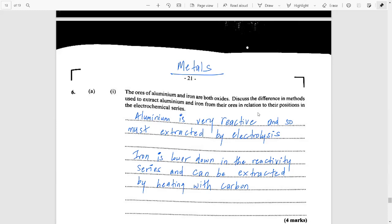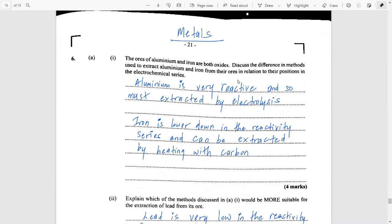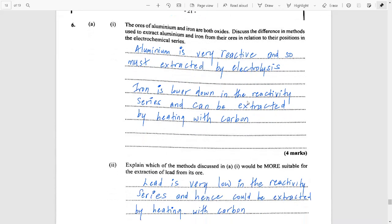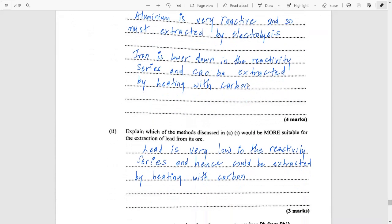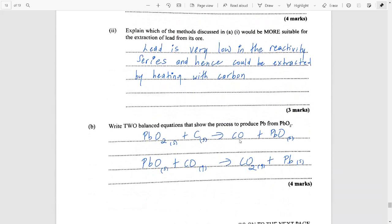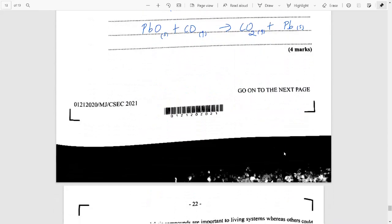However, I am hoping that during the school year, you would have been exposed to metals and metal extraction. And being that you have to know all the topics for paper one that's coming up, I hope you were still able to bat this question away. So how you would have extracted aluminum is different from iron. Aluminum is more reactive, so you would have used electrolysis. Iron is lower down and so can be extracted by heating with carbon. Lead is below iron and is extracted in a similar way to how you would extract iron by heating it with carbon. And this would show you the two equations for how you would extract the lead.